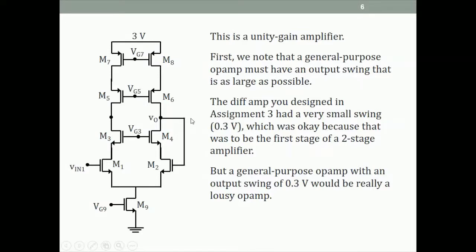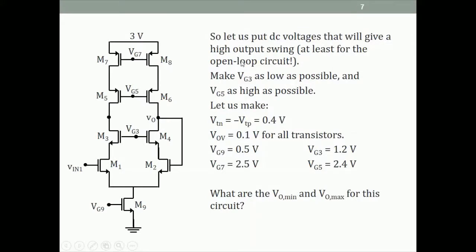To find the output swing it is best to put in numbers — it's much easier than working with expressions. Let's choose numbers such that we get as high an output swing as possible for the open loop. We want Vo to go as high and as low as possible while keeping all transistors in saturation, meaning we want Vg5 as high as possible and Vg3 as low as possible.